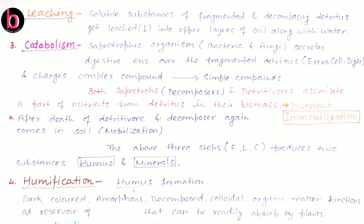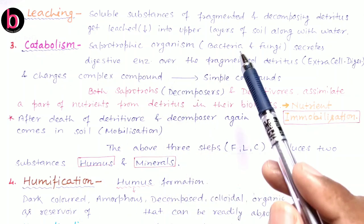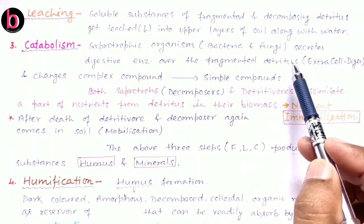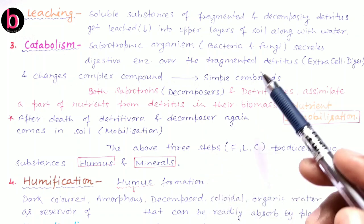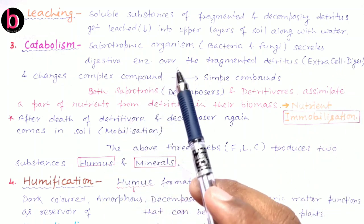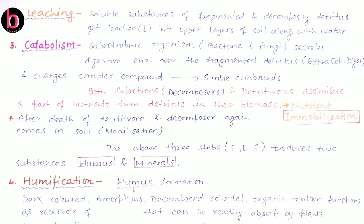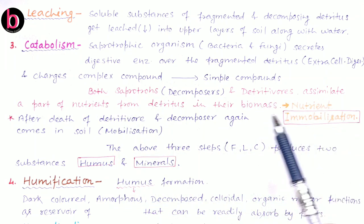The third step is catabolism — the breaking down of substances with the help of a number of enzymes. This process is mainly performed by saprotrophic organisms, also known as decomposers, which are bacteria and fungi. They secrete their digestive enzymes over the fragmented detritus, causing extracellular digestion and converting complex compounds into simple compounds. Both saprotrophs and detritivores assimilate a part of nutrients from the detritus into their biomass.